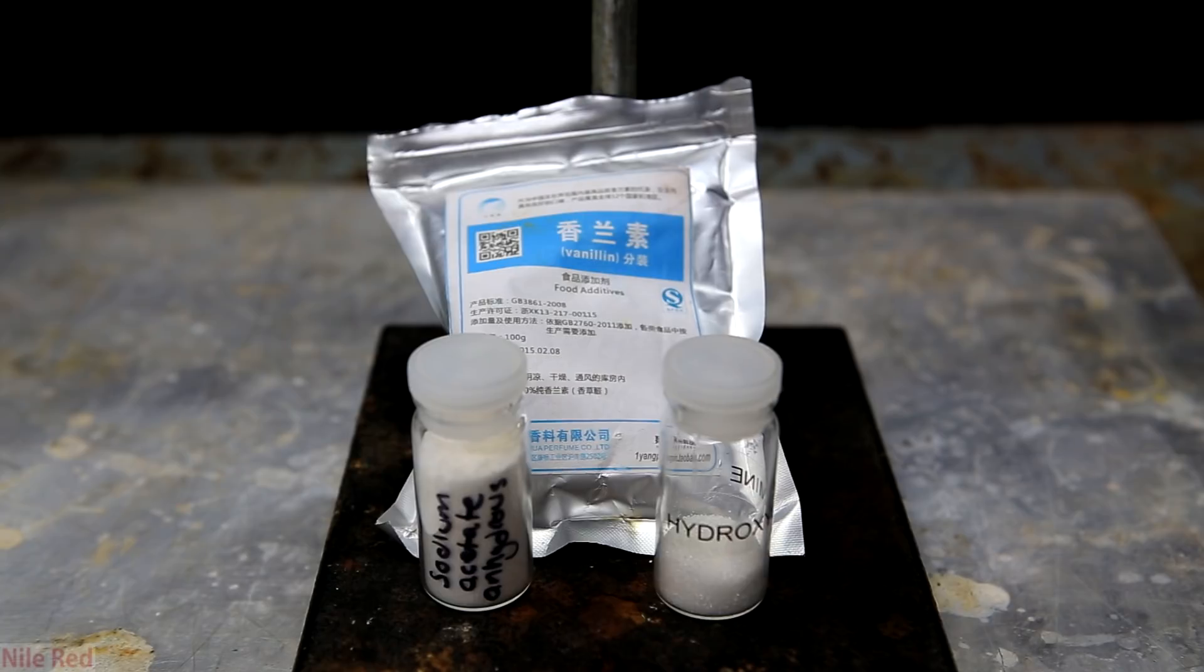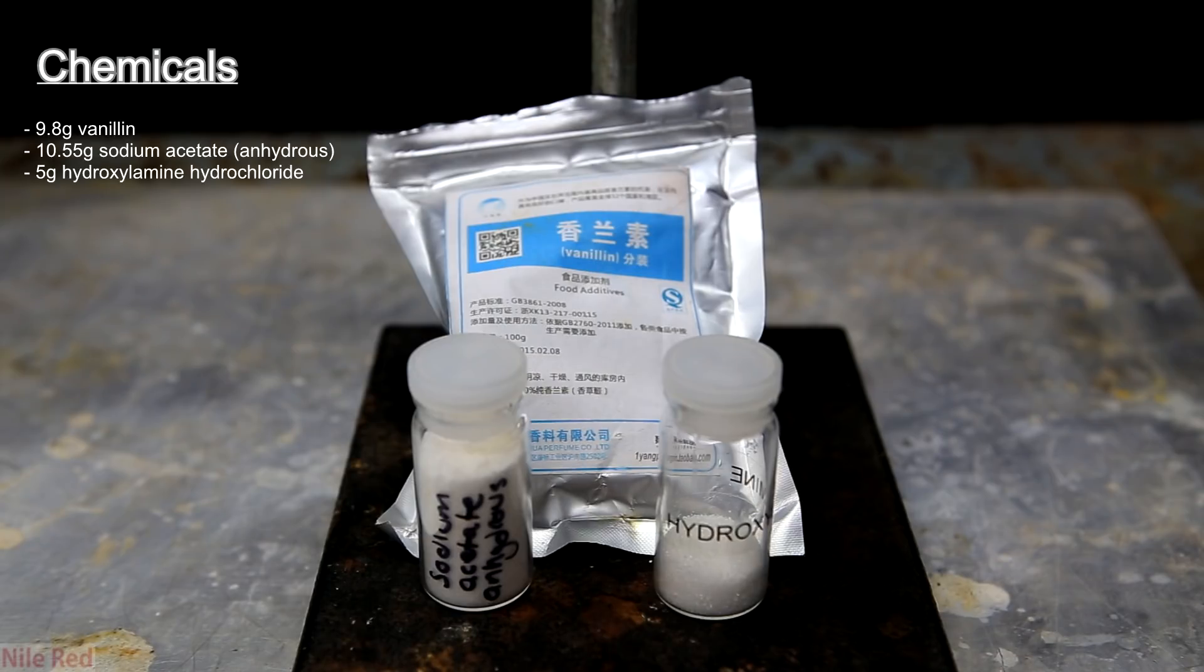Making the sodium acetate is pretty easy and it just involves mixing vinegar and baking soda but the hydroxylamine hydrochloride is a little bit more involved. Anyway I used 5 grams of hydroxylamine hydrochloride, 9.8 grams of vanillin and 10.55 grams of anhydrous sodium acetate.